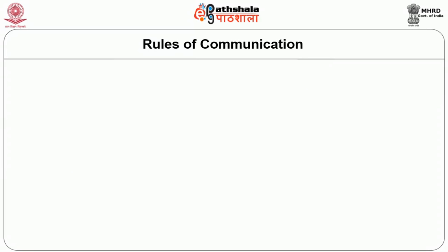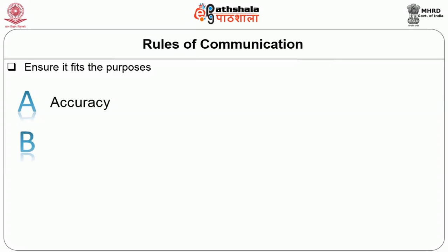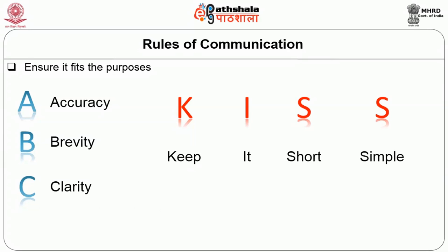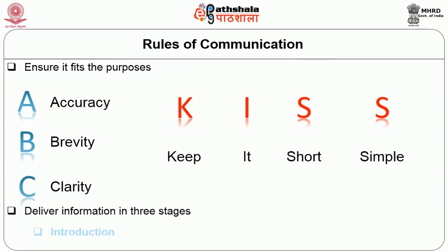Rules for communication: ensure it fits the purpose. A, B, C — A stands for accuracy, B stands for brevity, and C stands for clarity. K-I-S-S stands for keep it short and simple. Deliver information in three stages: introduction, main body of the content, and summary.